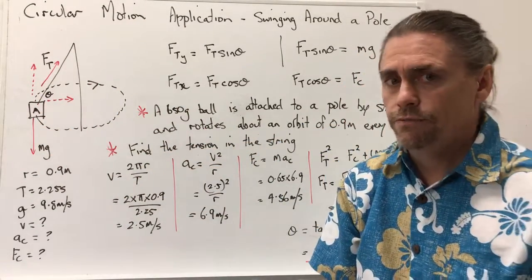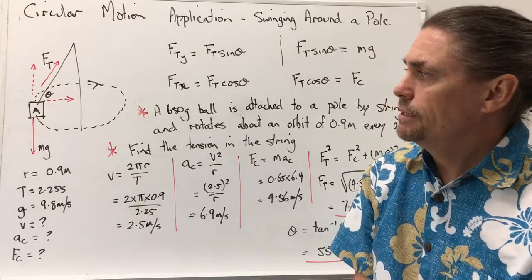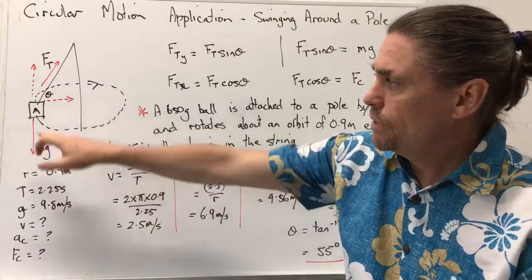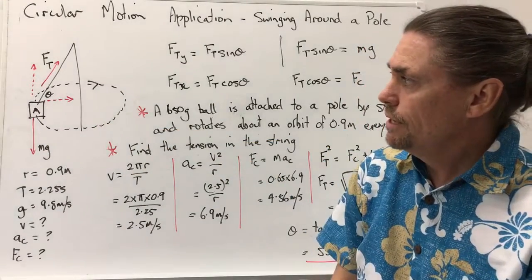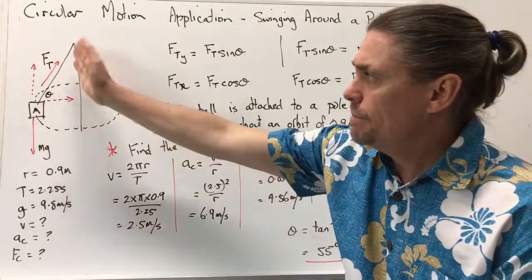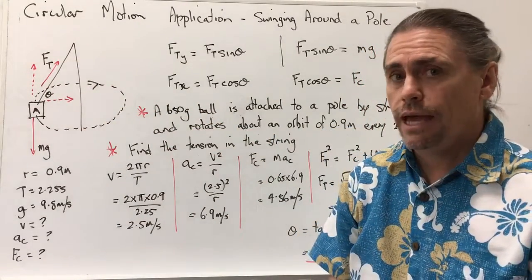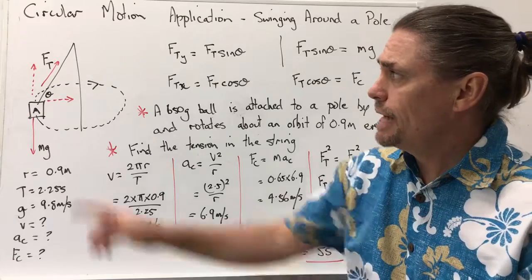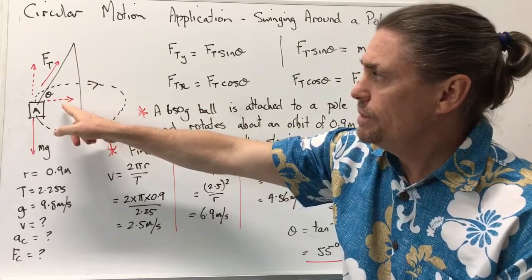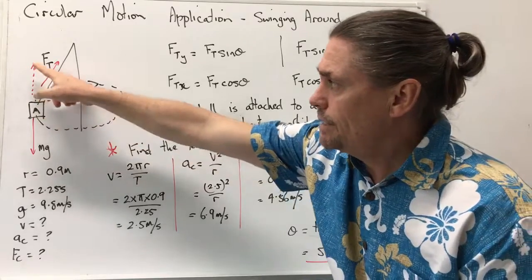Now there's a few forces on this particular object. First of all, we've got gravity acting on the object, so we've got mg acting downwards. We've also got a tension in our string, and that's at some angle theta. Now we can split that tension force into its horizontal component, which will be Ft_x and Ft_y in the vertical component.